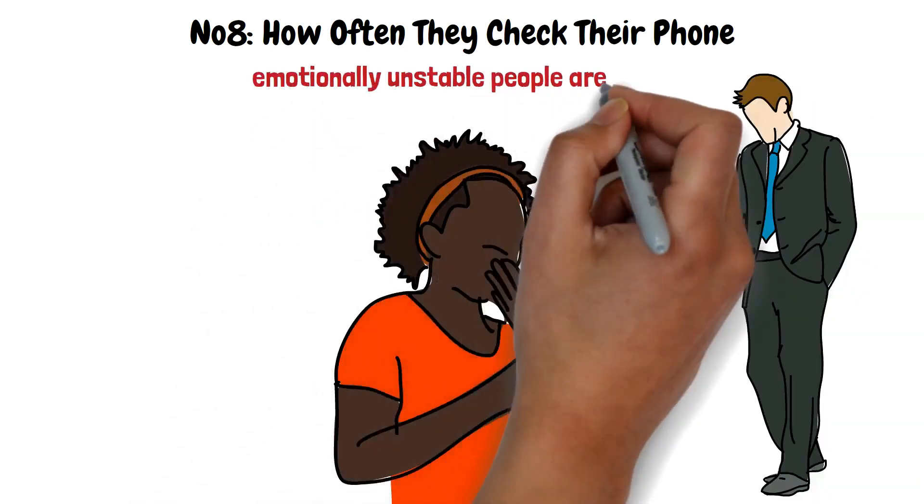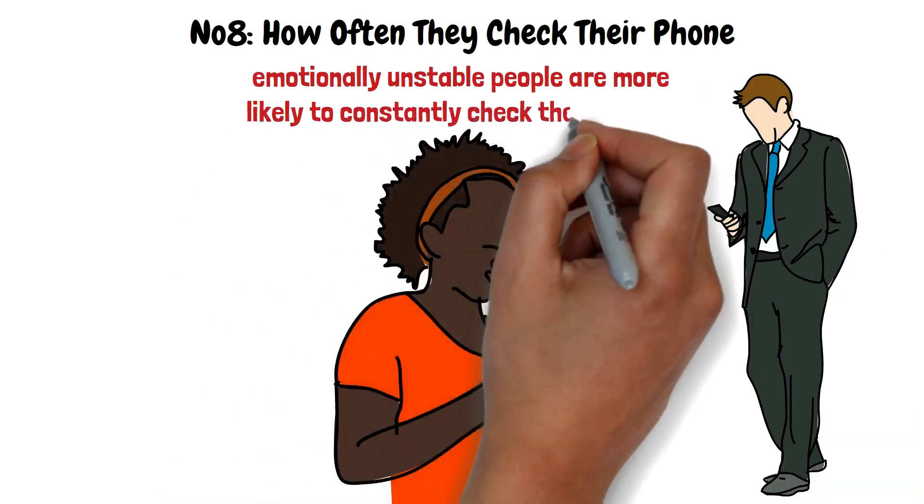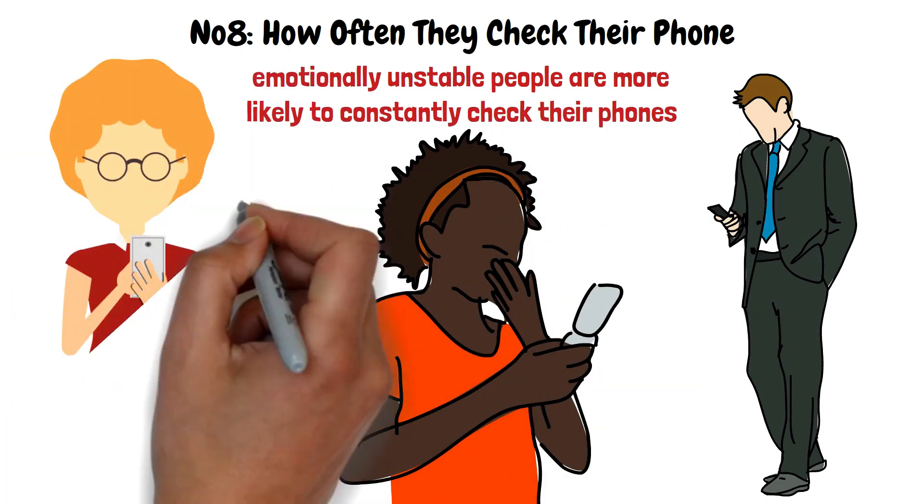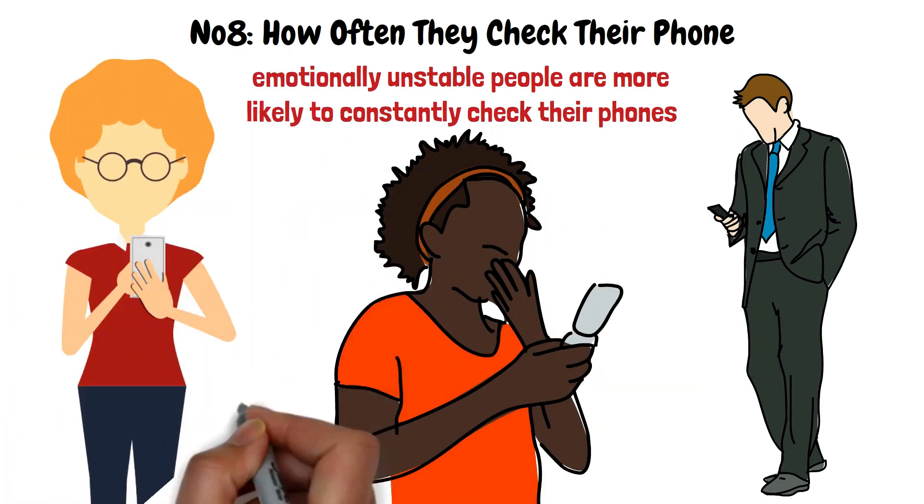Recent studies also show that emotionally unstable people are more likely to constantly check their phones. For them, that is a way of boosting their mood. Also, there is evidence that impulsive people check their phones more often than most others.